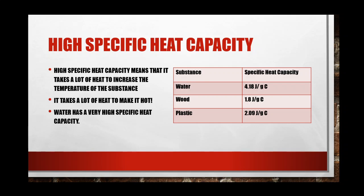Now for high specific heat capacity — I found three examples you'd probably be very familiar with. A high specific heat capacity means it takes a lot of energy to increase the temperature of the substance. Notice in the table that everything is over one, whereas the low specific heat table had everything under one. So it takes a lot of heat to make it hot.